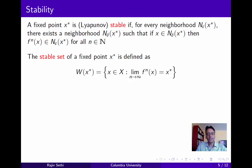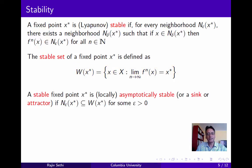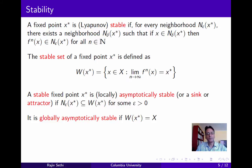We define the stable set of a fixed point x-star as the set of all seeds that give rise to orbits that converge to x-star. We say that a stable fixed point x-star is locally asymptotically stable, or a sink or an attractor, if there exists an epsilon neighborhood of this point that is contained in the stable set. The interpretation is that if you start close enough to x-star, then all orbits will converge to x-star. A point is globally asymptotically stable if all orbits converge to x-star no matter where they start.